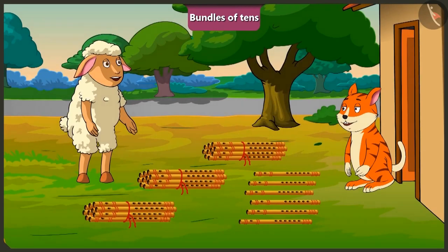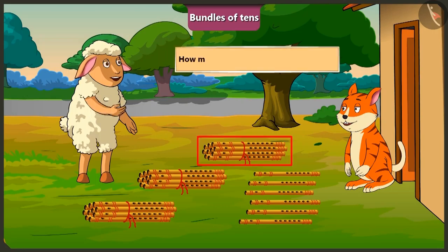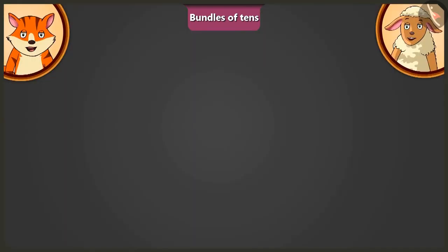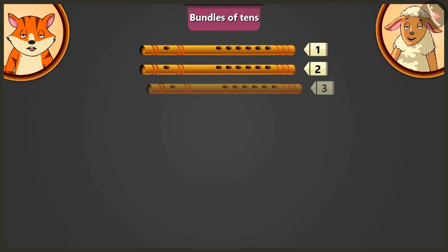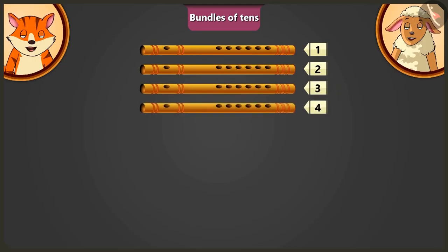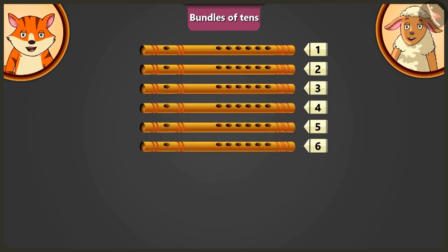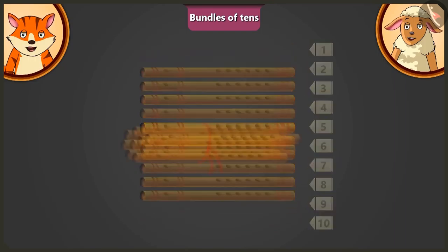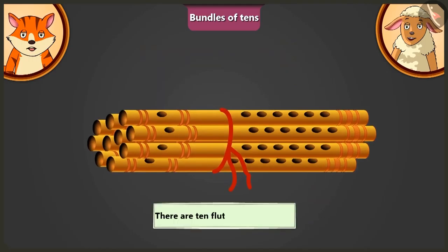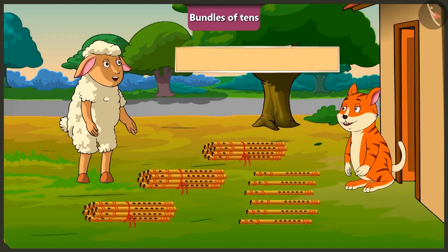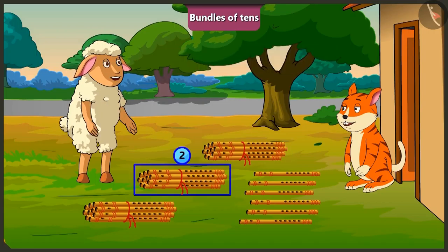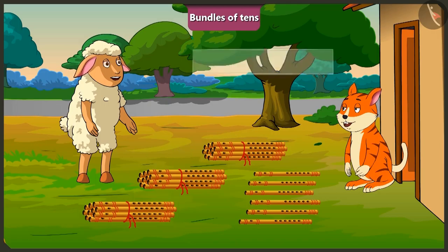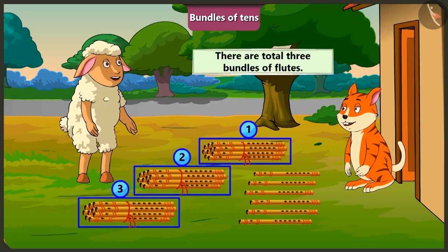Come on, now let us count these flutes. Pili, how many flutes are there in one bundle? 1, 2, 3, 4, 5, 6, 7, 8, 9, 10. Then, 1 bundle here has 10 flutes. How many bundles of flutes are there in total? 1, 2, 3. There are total 3 bundles of flutes.